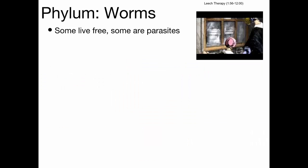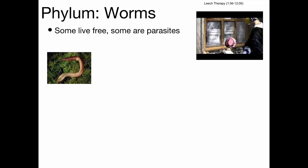Worms are not one phylum — there are actually three phyla of worms: Annelida, the segmented worms; Nematoda, the roundworms; and Platyhelminthes, the flatworms. The most familiar is the earthworm, which is a segmented worm — an annelid. If you look closely at an earthworm, you can see all those little sections, which is why it's called a segmented worm.